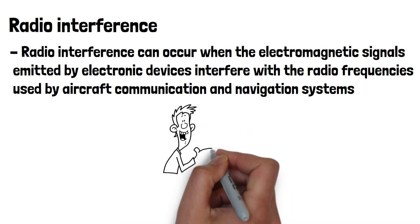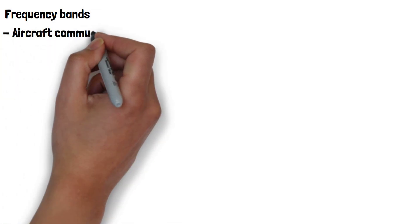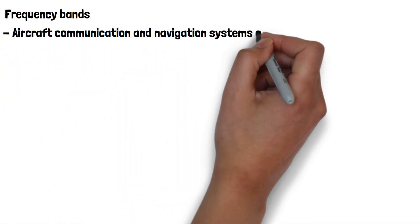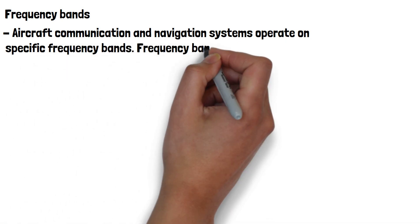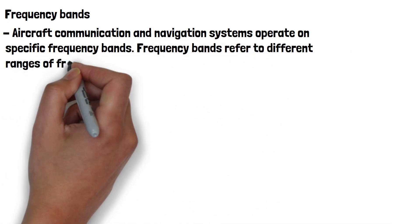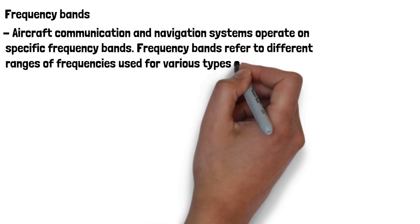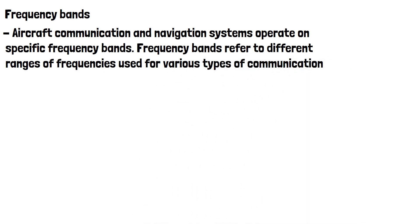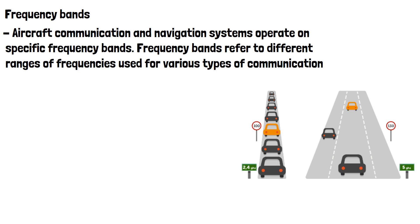Let's look at that in a bit more technical detail, starting with frequency bands. Aircraft communication and navigation systems operate on specific frequency bands — different ranges of frequencies used for various types of communications. Think of it like different lanes on a highway or motorway, where specific ranges of frequencies are used by devices to send and receive signals, each with a set of frequencies assigned to it for different purposes.